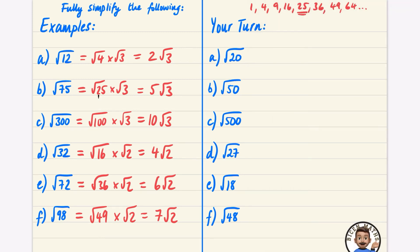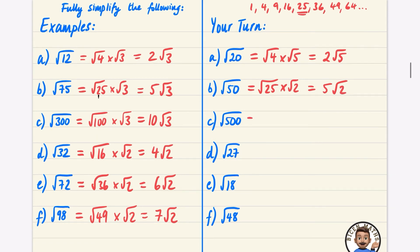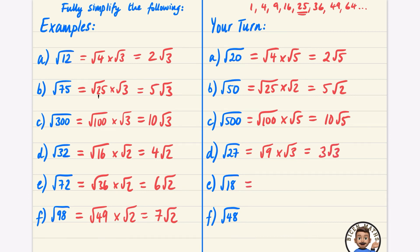Pause the video and have a go at the your-turn questions. For √20: 4 is a square factor, so √4 × √5 = 2√5. For √50: 25×2 = 50, so √25 × √2 = 5√2. For √500: 100×5 = 500, so √100 × √5 = 10√5. For √27: 9 is a factor, so √9 × √3 = 3√3.